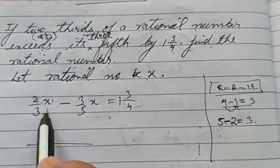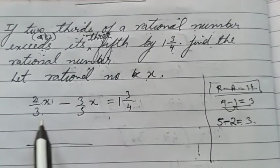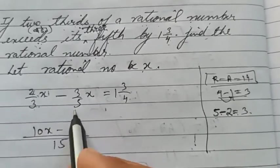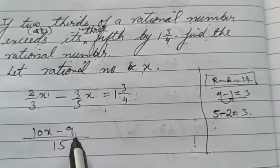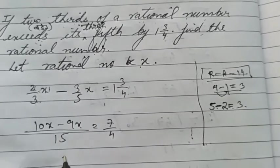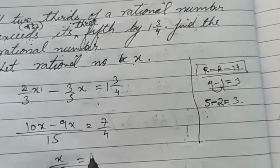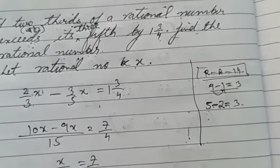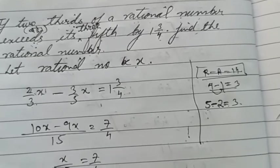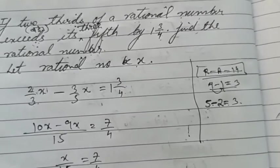Three upon five of the rational number by 1¾. Now you need to solve. Just take LCM, both are of same terms, three and five. Fifteen - three times five is ten x, three times three is nine x. Subtract to get x upon fifteen.